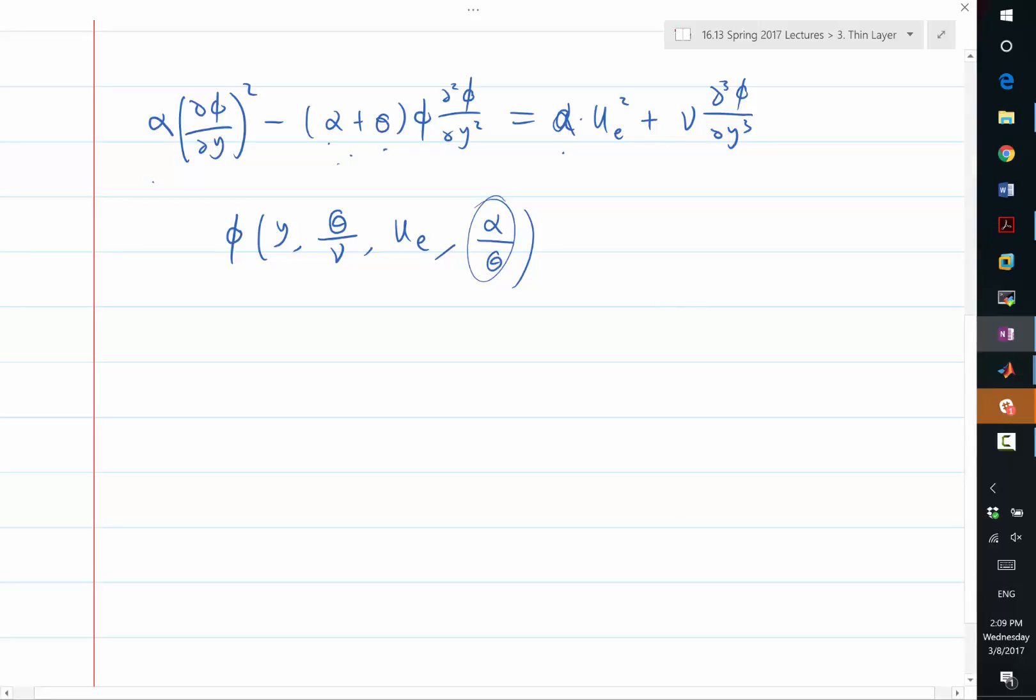So when you non-dimensionalize the coordinates y, you can still non-dimensionalize to the same thing. So y over square root of theta divided by nu ue. Can somebody check if that's right? I think it's still right. Actually, no. So it's nu over theta ue. And alpha over theta. So this alpha over theta serves as another parameterization of the solution to the equation. And after non-dimensionalization,